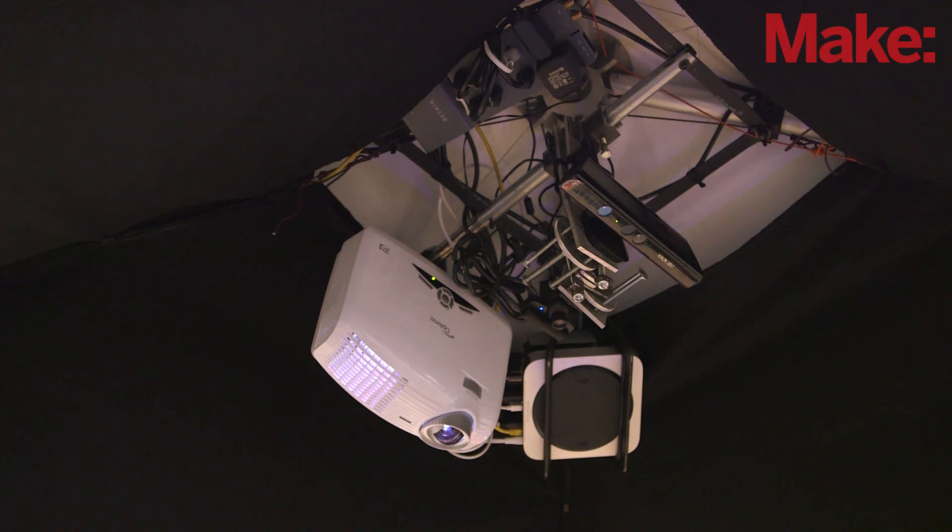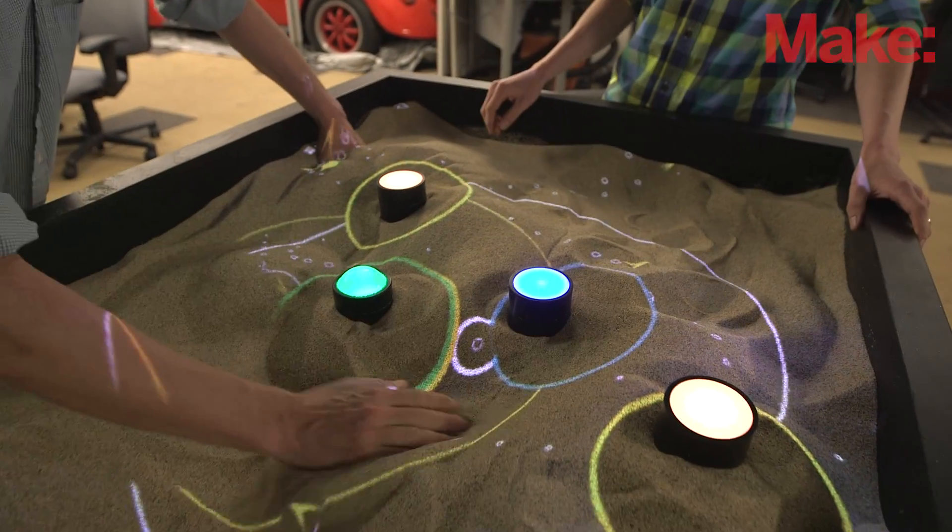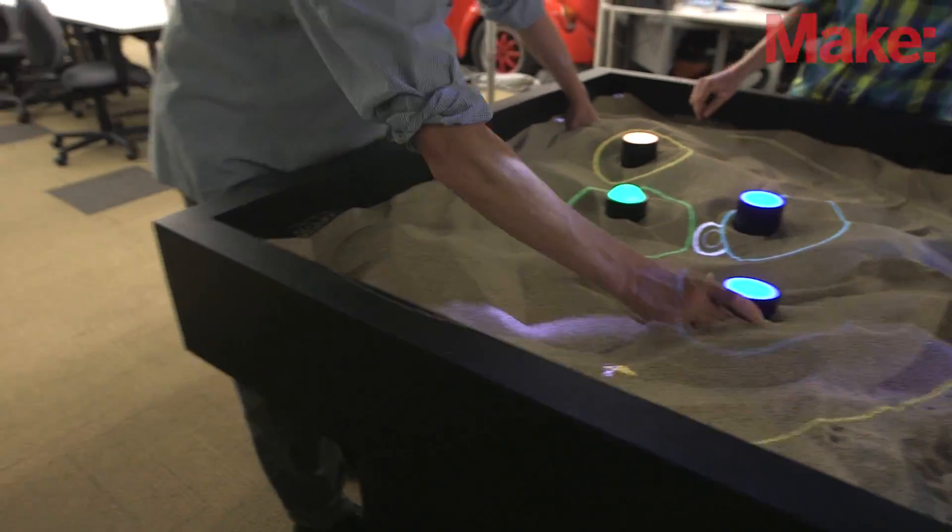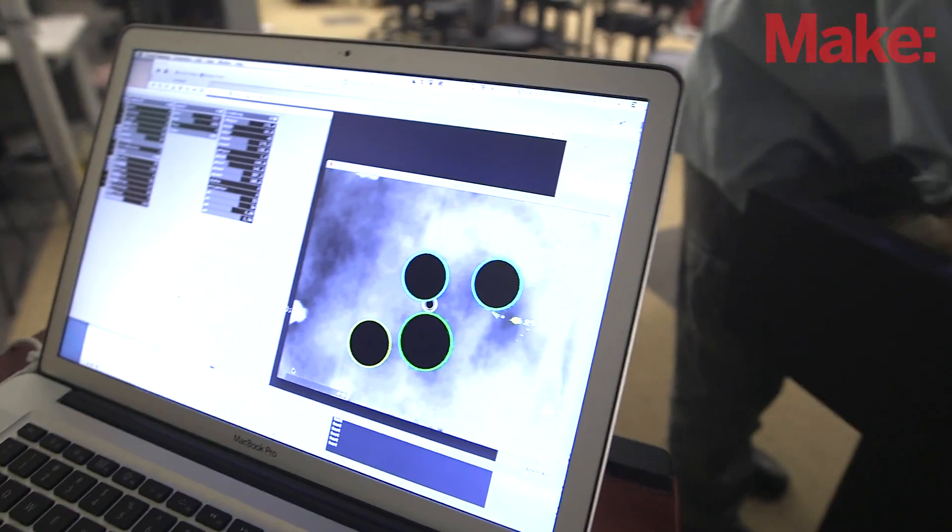And so we're reading that and going through basically an array of pixels that knows how high this is versus how high this is.